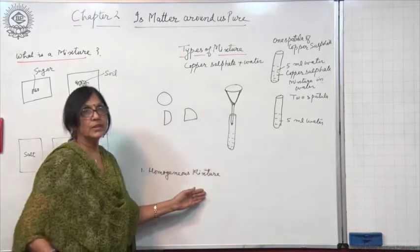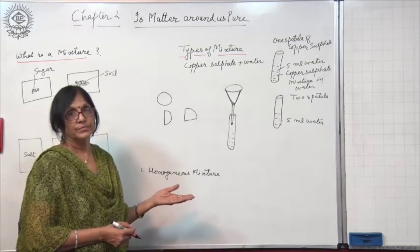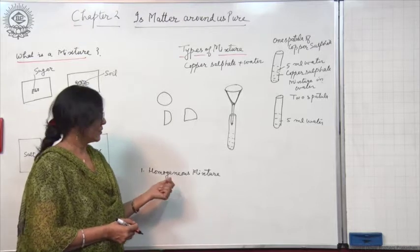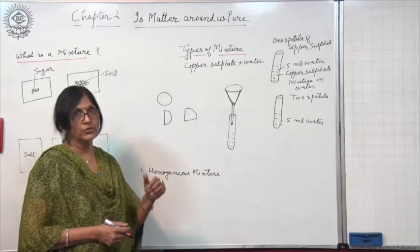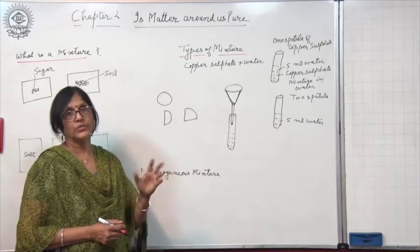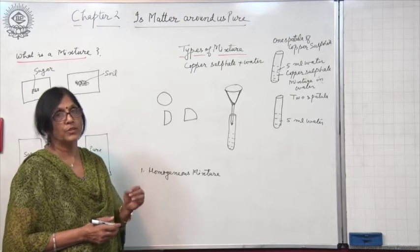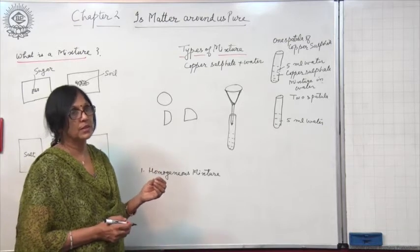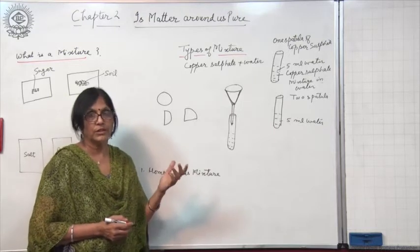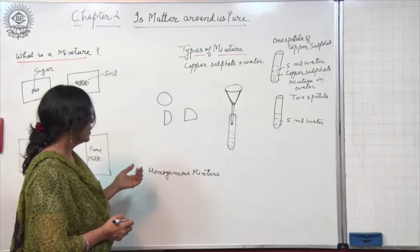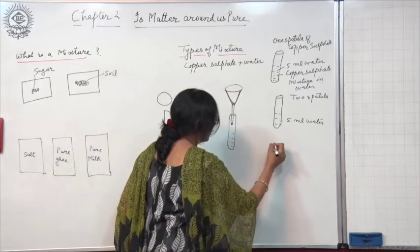A homogeneous mixture has uniform composition throughout its mass and there are no visible boundaries of separation between its constituents. You cannot see the constituents with the naked eye — they are so uniformly mixed that the composition is uniform throughout. Homogeneous mixtures are also called solutions.